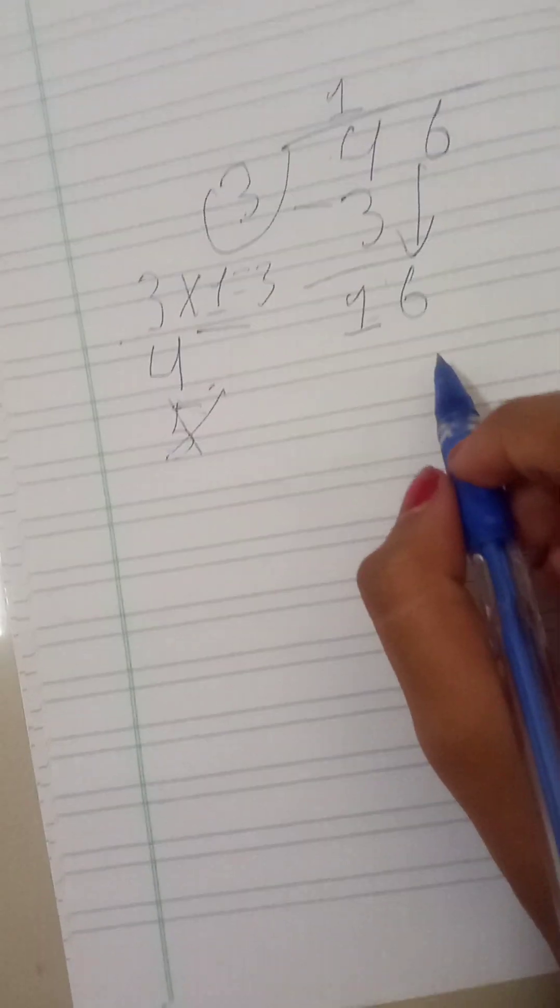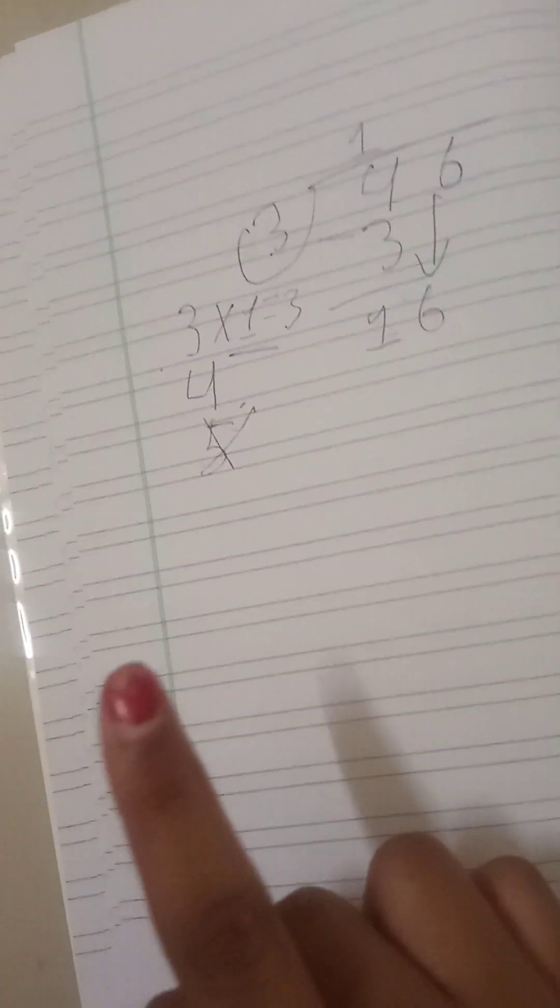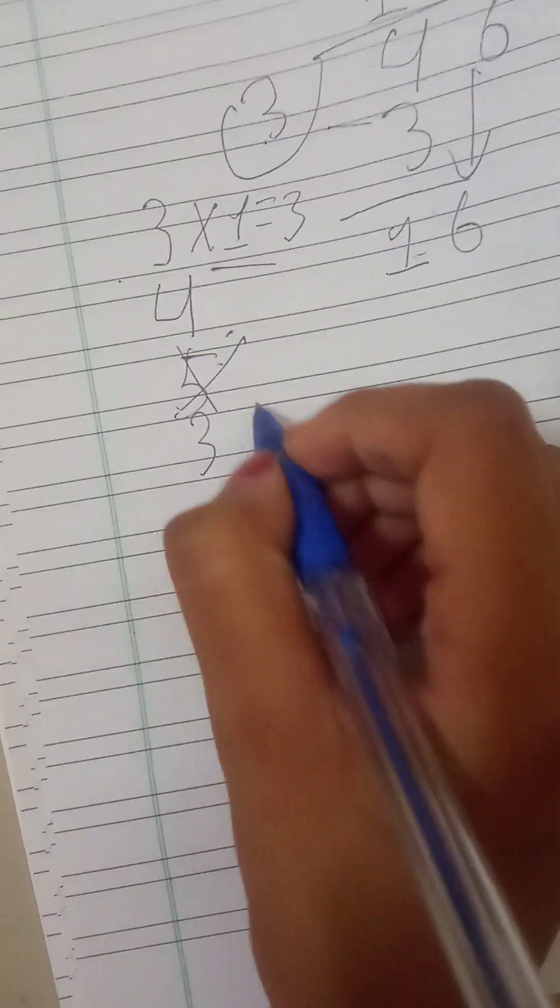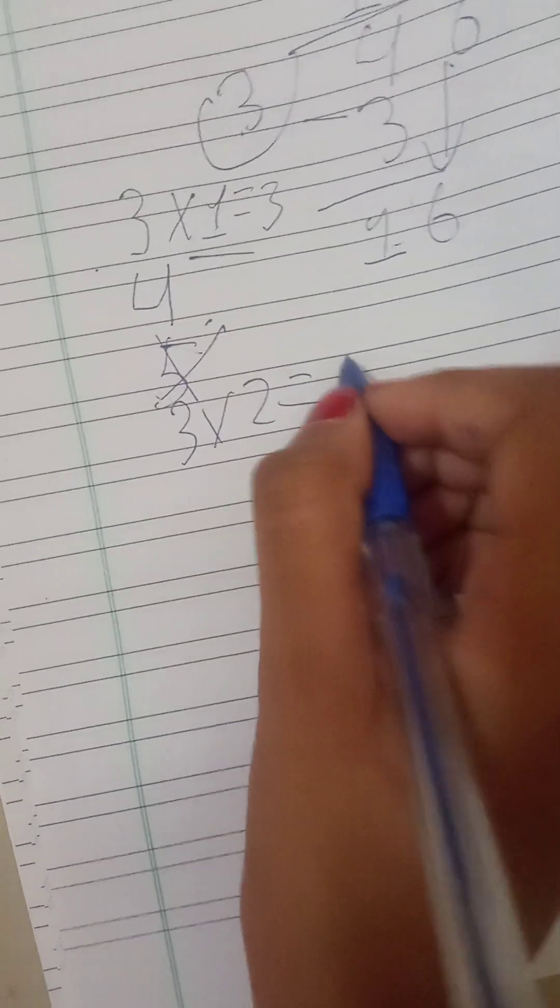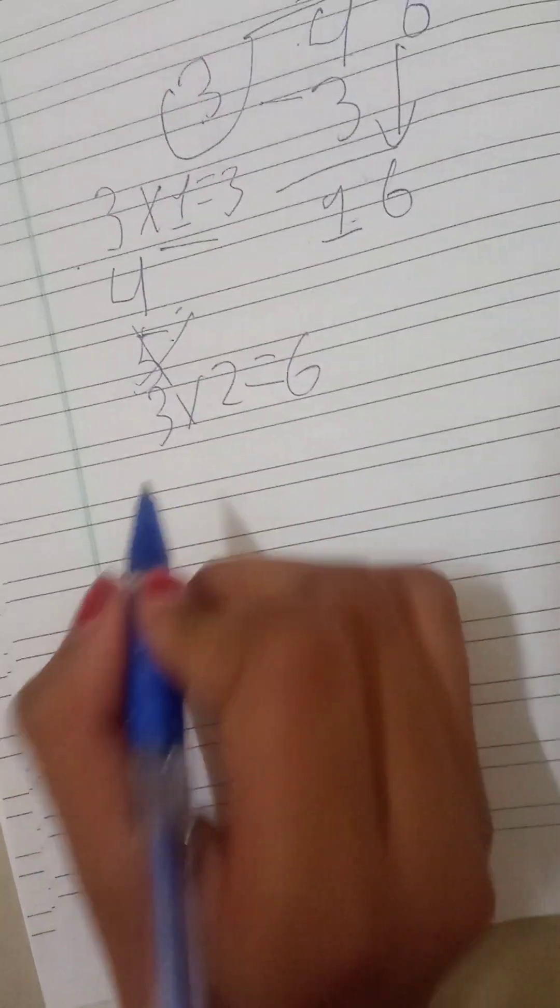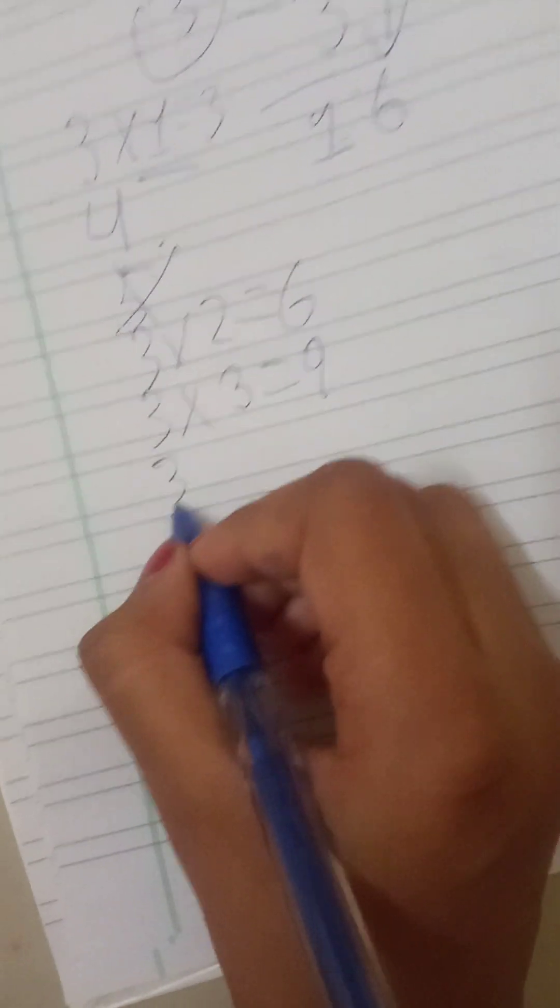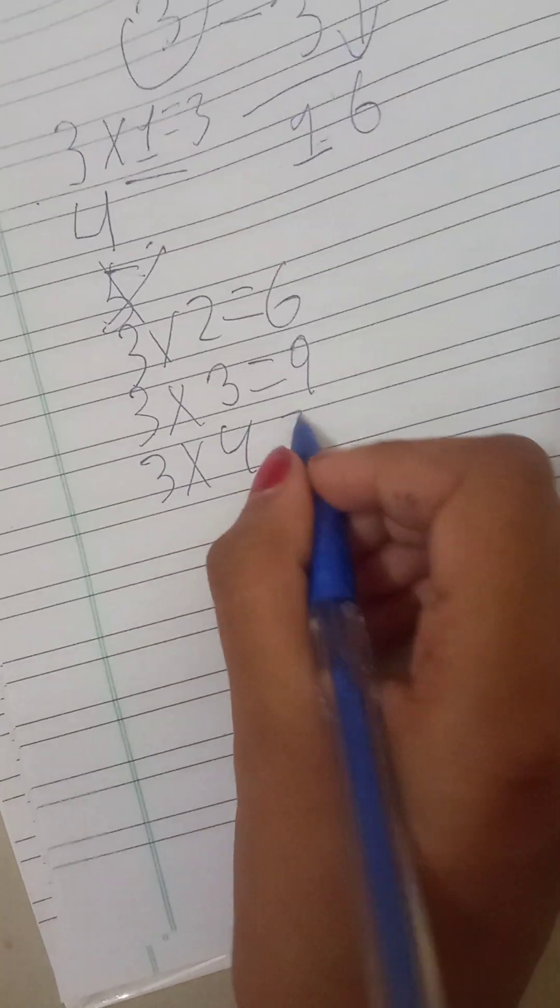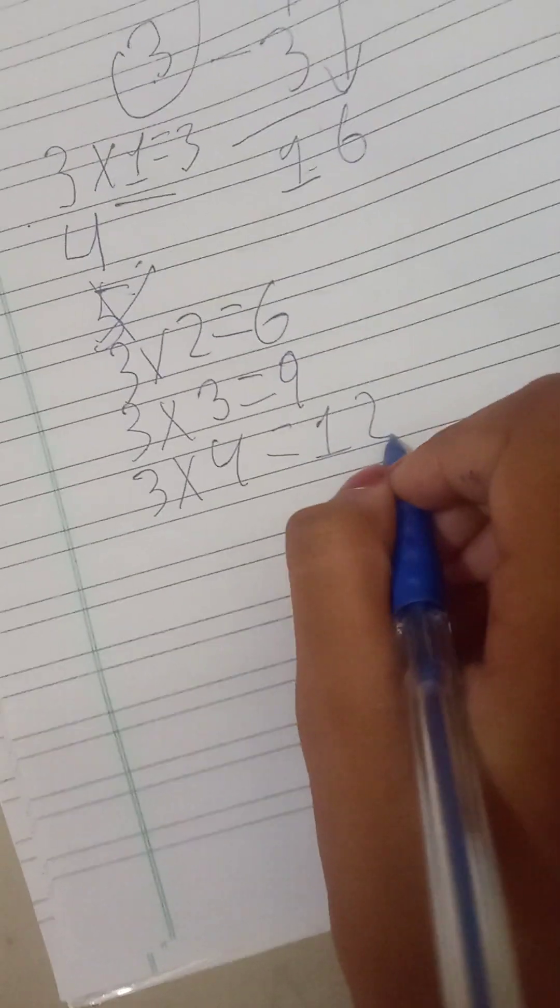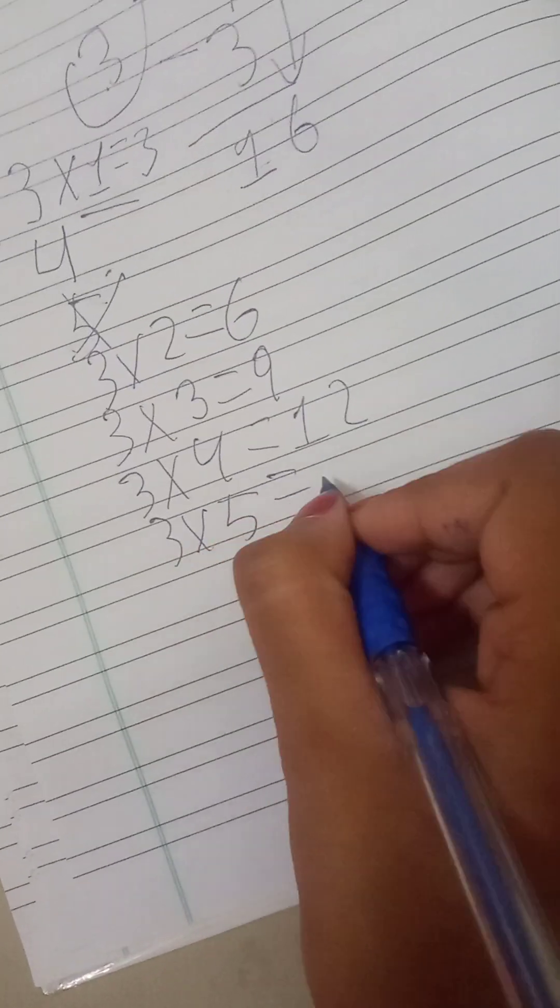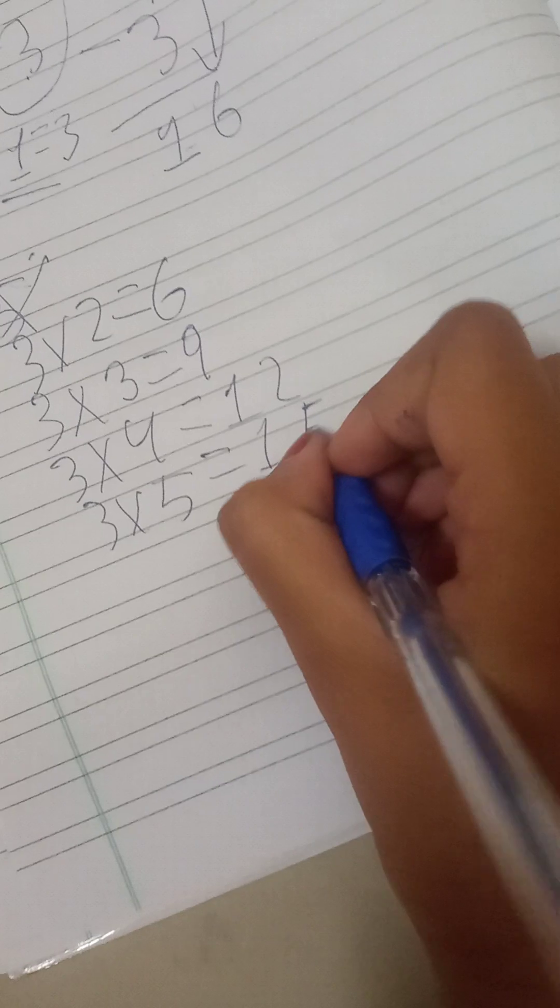Now, 16 doesn't come into 3's table. What should we do? Let's see what comes near 16. 3 times 2 is 6. No, that's too small. 3 times 3 is 9. Still small. 3 times 4 is 12. Too small. 3 times 5 is 15. Perfect number.